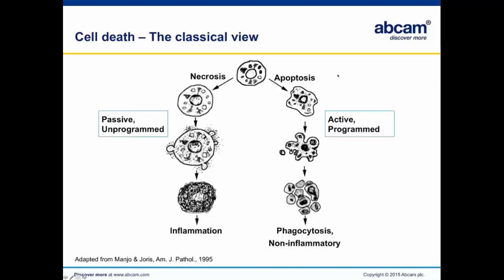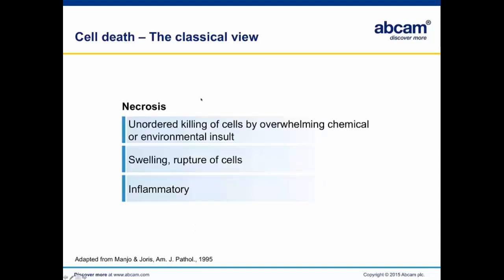When we say programmed, we mean a means for a cell to die on purpose — a form of cellular suicide carried out by specific enzymes within the cell. This is a figure from 1995, a classical view of cell death. Necrosis is the unordered killing of cells by chemical or environmental damage — adding bleach to your tissue culture dish would induce necrosis, as would freeze-thaw. These toxins can trigger necrosis.